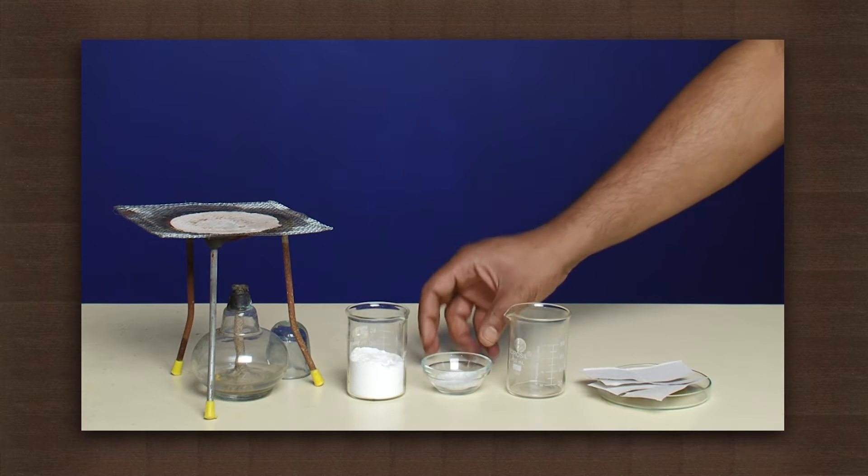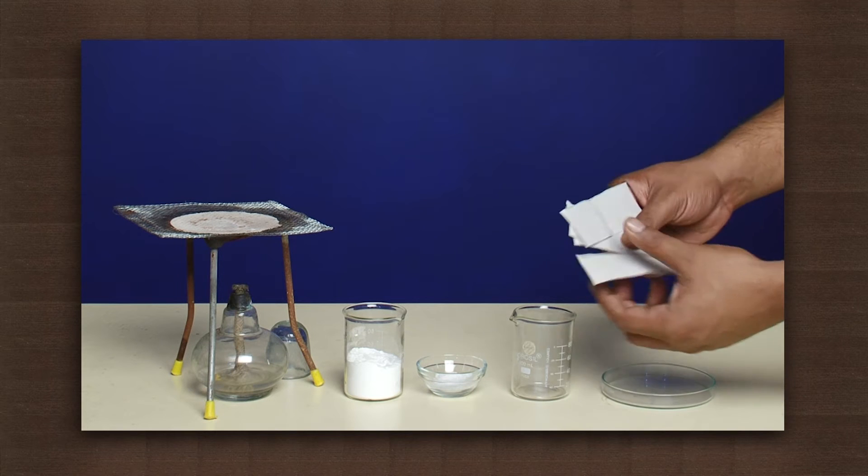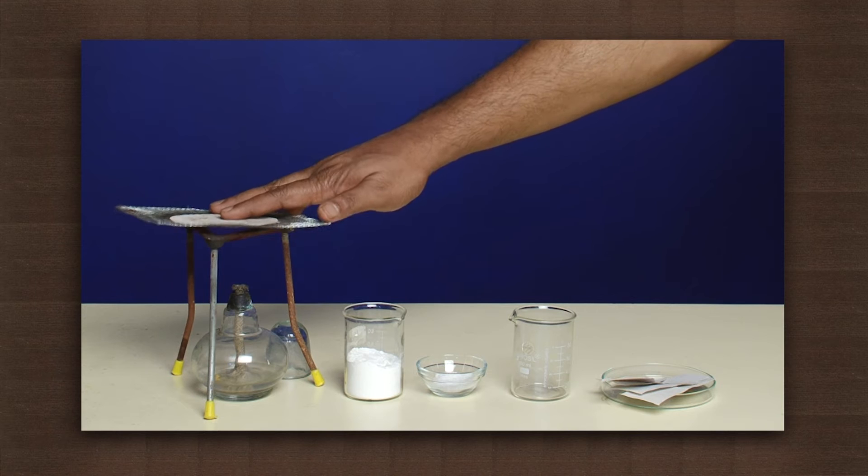Here we have starch powder, potassium iodide powder, filter paper cut in strips, an empty beaker, and a burner.